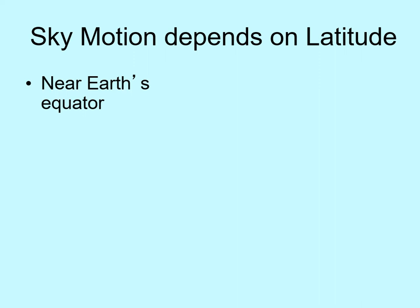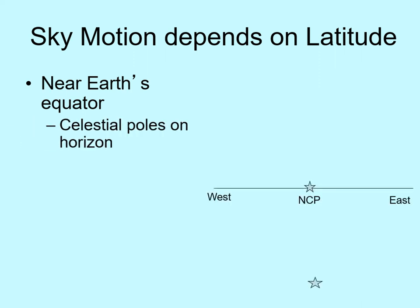Let's start by assuming we're standing at the Earth's equator. Someone there would see the north celestial pole right on their northern horizon and the south celestial pole right on their southern horizon. As the Earth turns, stars appear to rotate around this point, and we only see a star when it comes up above the horizon — so it looks like the star rises in the east and sets in the west. When we started talking about daily motion making things rise and set, we were really describing the view from the Earth's equator.